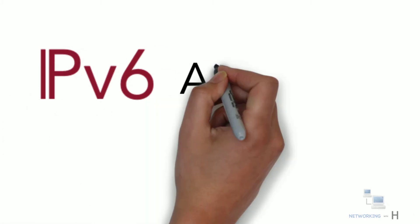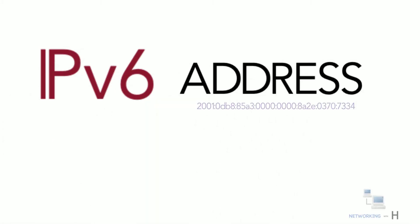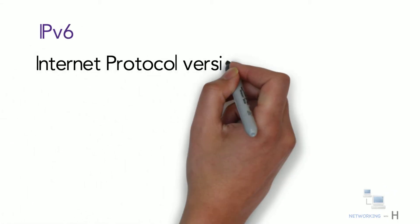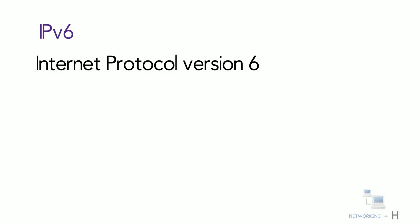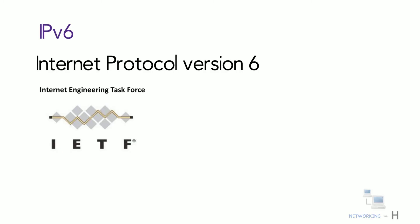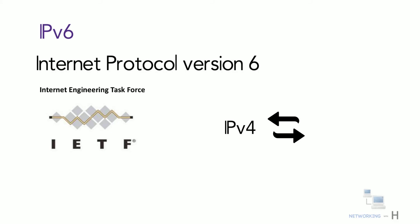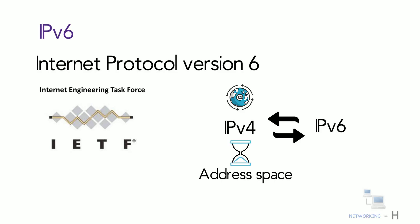Hello everyone. In this session of the CCNA series, I'll discuss IPv6 basics and features. IPv6, or Internet Protocol version 6, is the most recent version of the Internet Protocol developed by the Internet Engineering Task Force or IETF. It is the next generation Internet Protocol standard intended to eventually replace IPv4, which is running out of addresses and is the protocol many Internet services still use today.